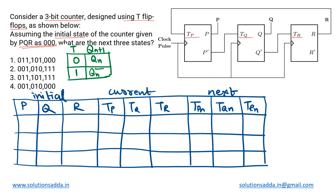To proceed, we start by determining the truth table of the T flip-flop. If the T value is zero, the next state is the same as the previous state — the latch mode. If it is one, we toggle; in that case the next state Q(n+1) will be the complement of Q(n), written as Q(n) bar. That is the truth table of the T flip-flop.